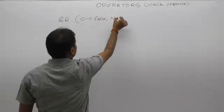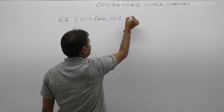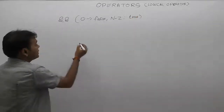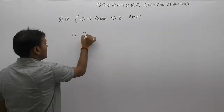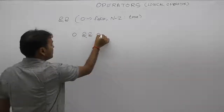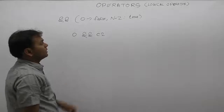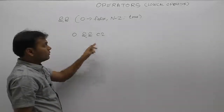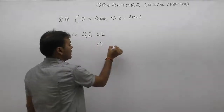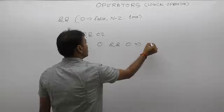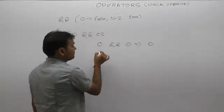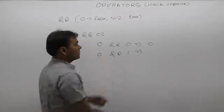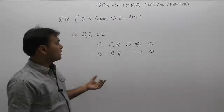Any non-zero value represents true. In the case of AND, if even one condition is false, the result is false. For example: if first condition is false and second is also false, result is false. If first is false and second is true, the overall result is still false.